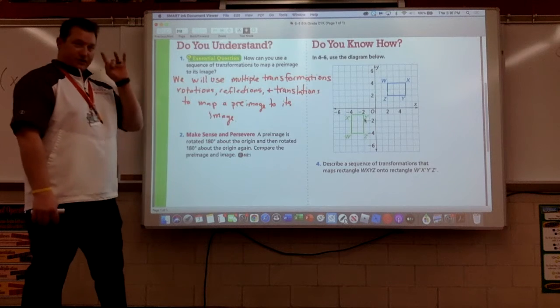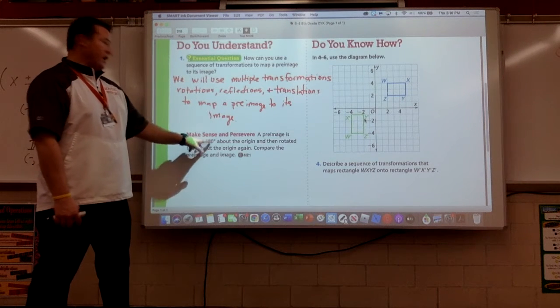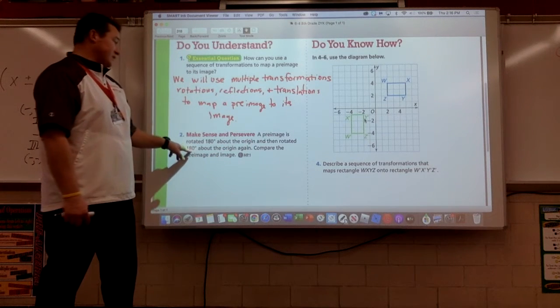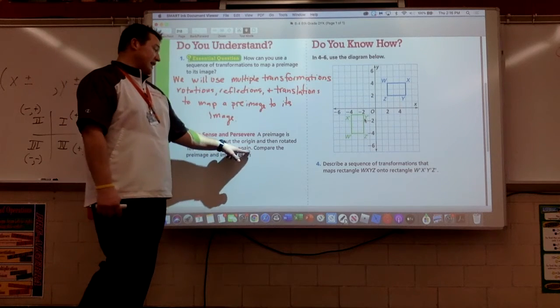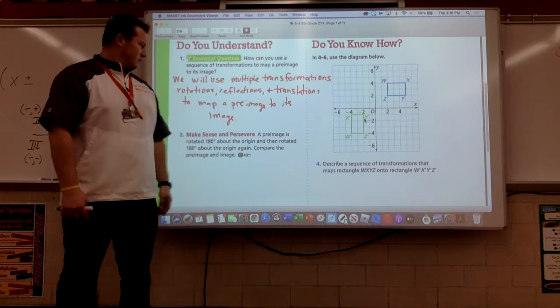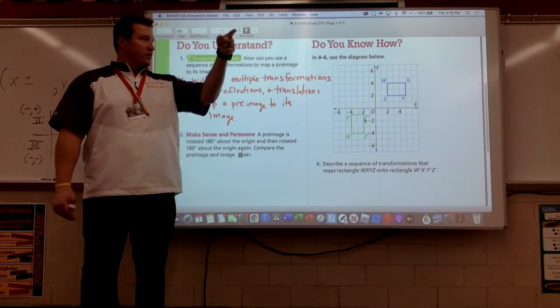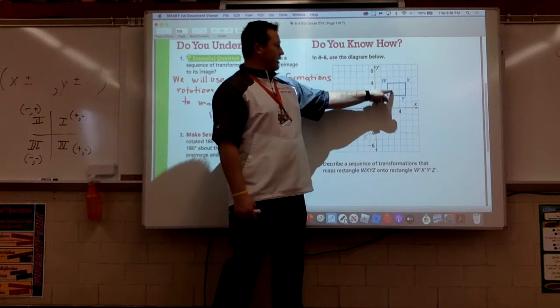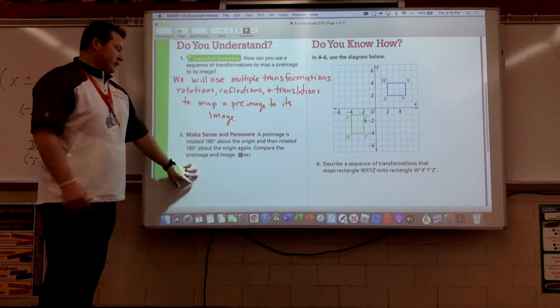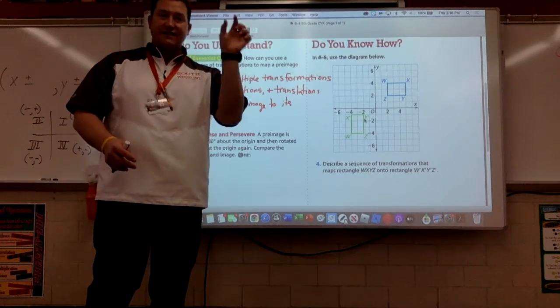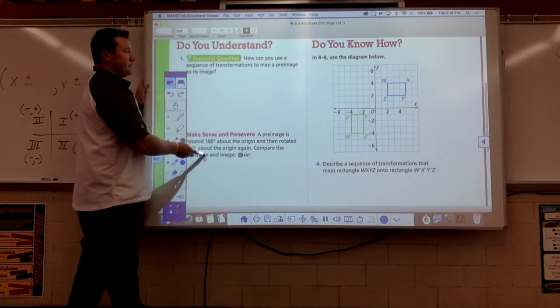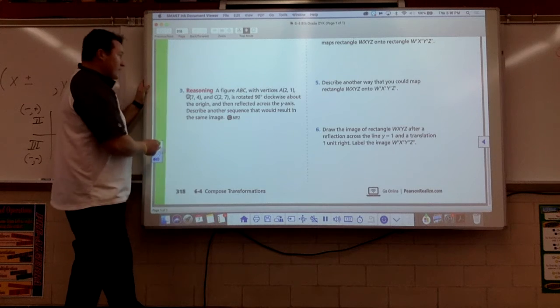Question number two. A pre-image is rotated 180 degrees about the origin. Remember, that's going to move two quadrants over. Then it's rotated another 180 degrees about the origin again. Compare the image to the pre-image. Wait a second, this is like a trick question. So if we rotated 180, we end up down here. Then I rotate another 180, we end up where we started. So the pre-image and the image are in the exact same spot. It's crazy.